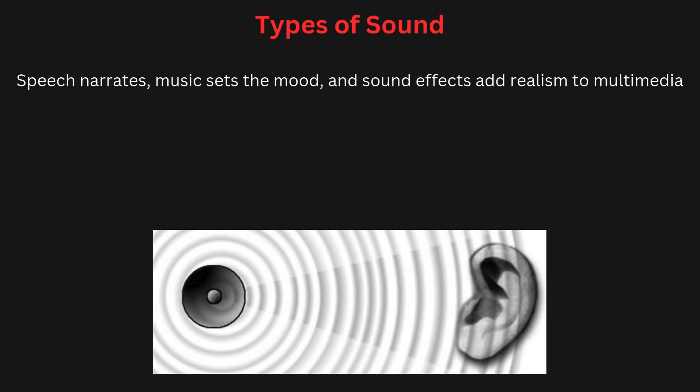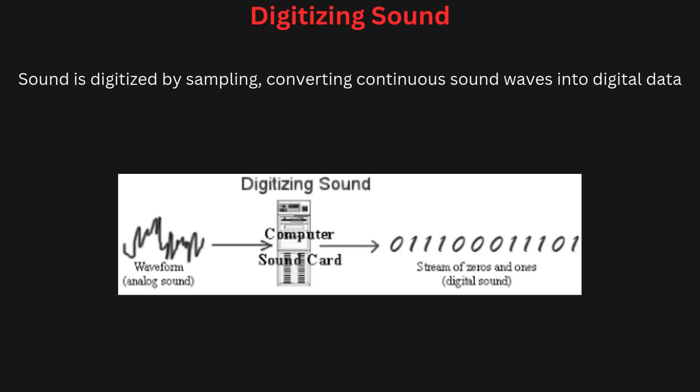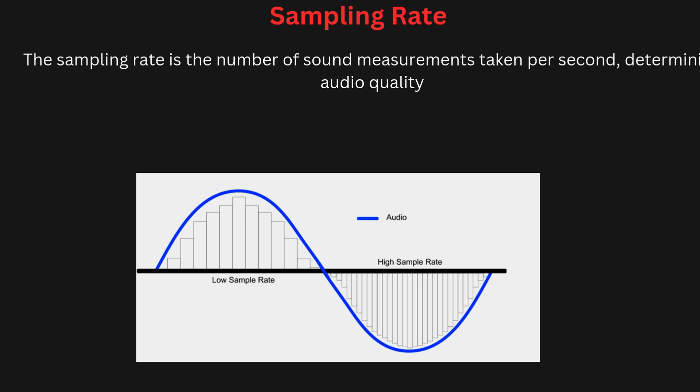For example, in a video game, sound effects provide realism while background music enhances the atmosphere. To use sound in computers, it must be converted from its natural analog form into a digital format — this process is called digitization. It involves sampling, where the sound wave is broken into small pieces at regular intervals. The sampling rate — how many samples are taken per second — and the sampling size — the number of bits used to store each sample — determine the quality of the digitized sound. Higher sampling rates and sizes result in more accurate digital representation but require more storage space.